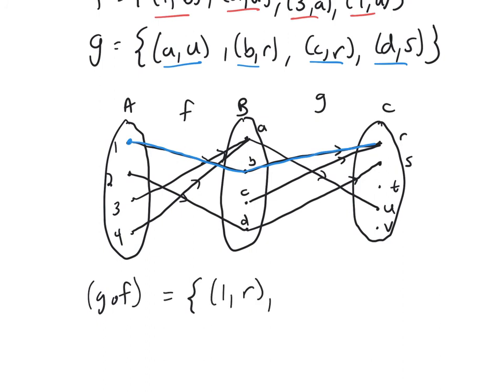Now 2, 2 goes to D, but then D goes to S. So you get 2 comma S. Now 3, 3 goes to A, and A goes to U. So you get 3 U.